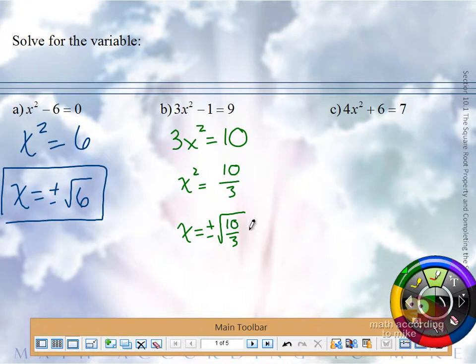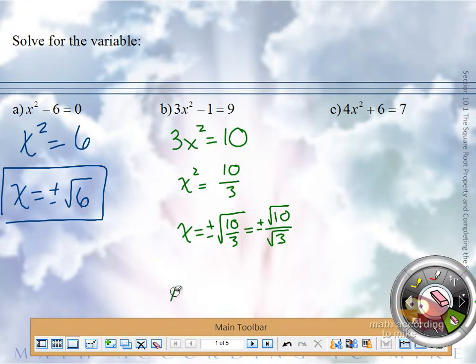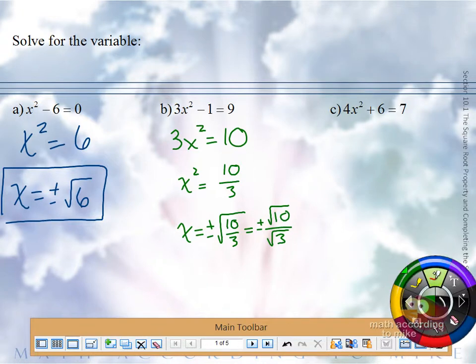So we have to break this up and we have to rationalize. Otherwise, you get the jelly crusties on your bread. You don't want that. What am I going to multiply top and bottom by to rationalize the denominator? Square root of 3.